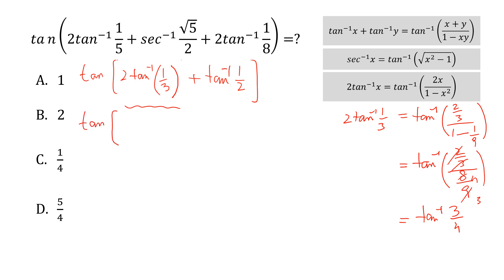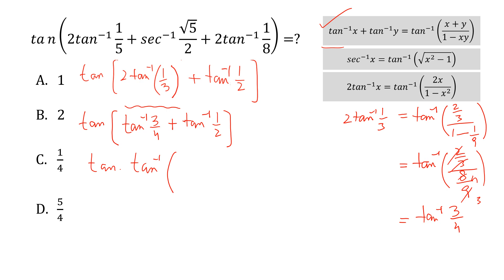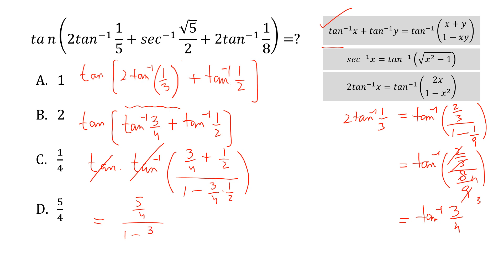Substituting this value, we now have tangent of tan⁻¹(3/4) plus tan⁻¹(1/2). Applying the addition formula: tan of tan⁻¹ of (3/4 + 1/2) divided by (1 minus 3/4 times 1/2). This simplifies to (5/4) divided by (5/8), which equals 1. This is the correct answer. Please like the video, share with your friends, and don't forget to subscribe to my YouTube channel. Thank you.